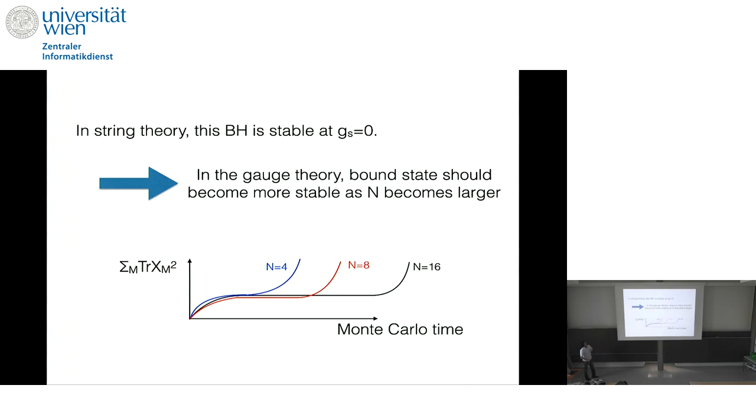And then gravity side, when we take large n limit and just use Einstein gravity, then there's no instability. So that would mean if duality is correct, if we take large n limit, then bound state should be very stable.